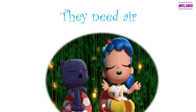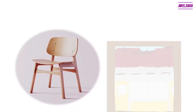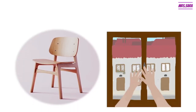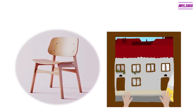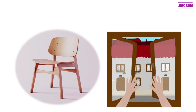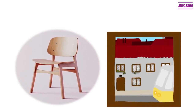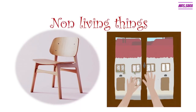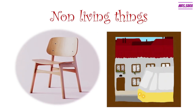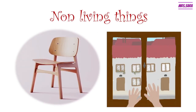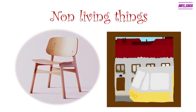Living things need food, water, and air. How about the chair or the window — do they need water? No. Do they need food? No. Do they need air? No. Why? Because they are not living things, so we call them non-living things. Anything that doesn't need food, water, or air, we call a non-living thing.